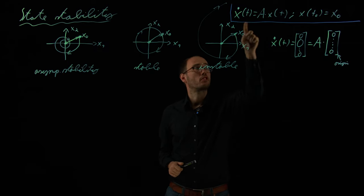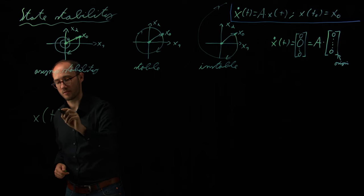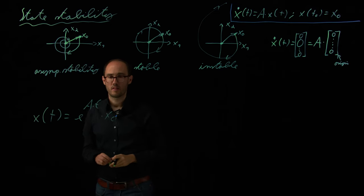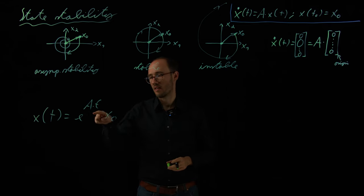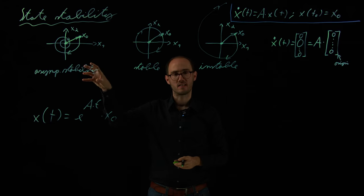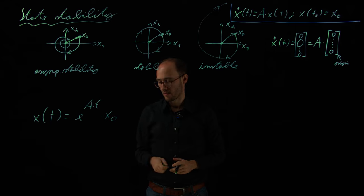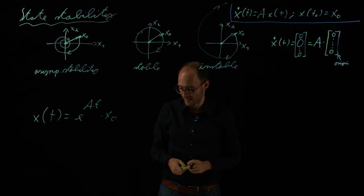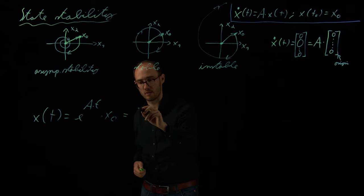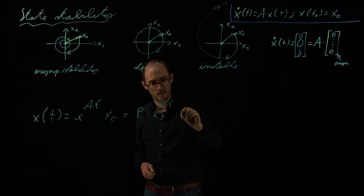Based on our system response, our exact system response calculus from one of the previous videos, where we had found out that the system response x of t is the matrix exponential e^(At) times x0, we can also have a closer look regarding the system properties of stability with respect to this matrix A, because we will basically see that we are able to characterize the system regarding its stability without the need to fully calculate the system response over time. And we can do that for the simple case, where we assume that A is diagonalizable, because as we have seen in one of our previous videos, in this case we can decompose that into P, our eigenvector matrix, times e^(Dt), times P inverse.